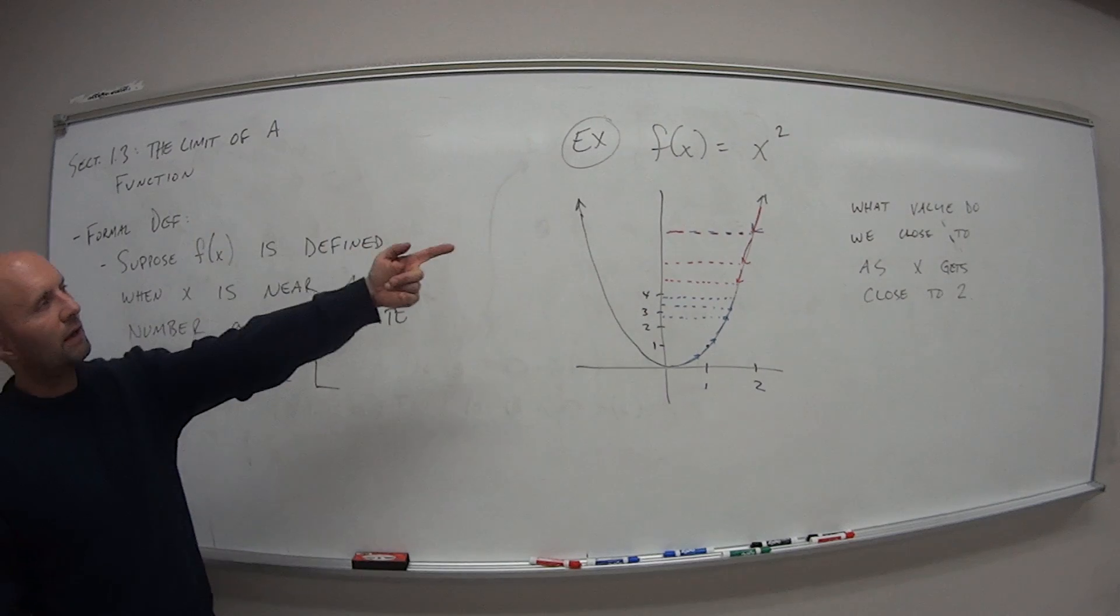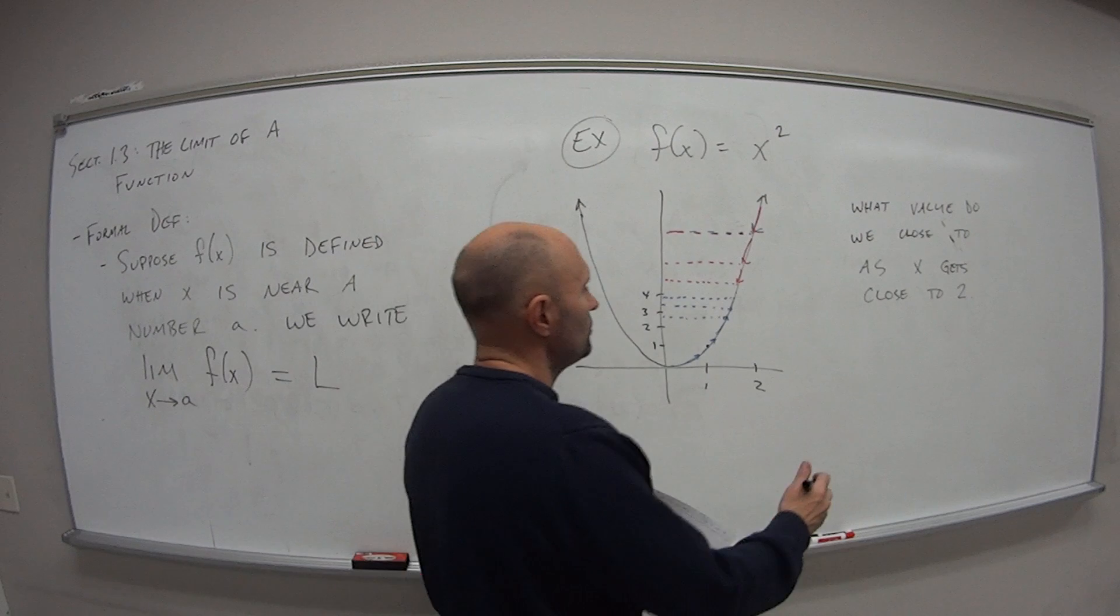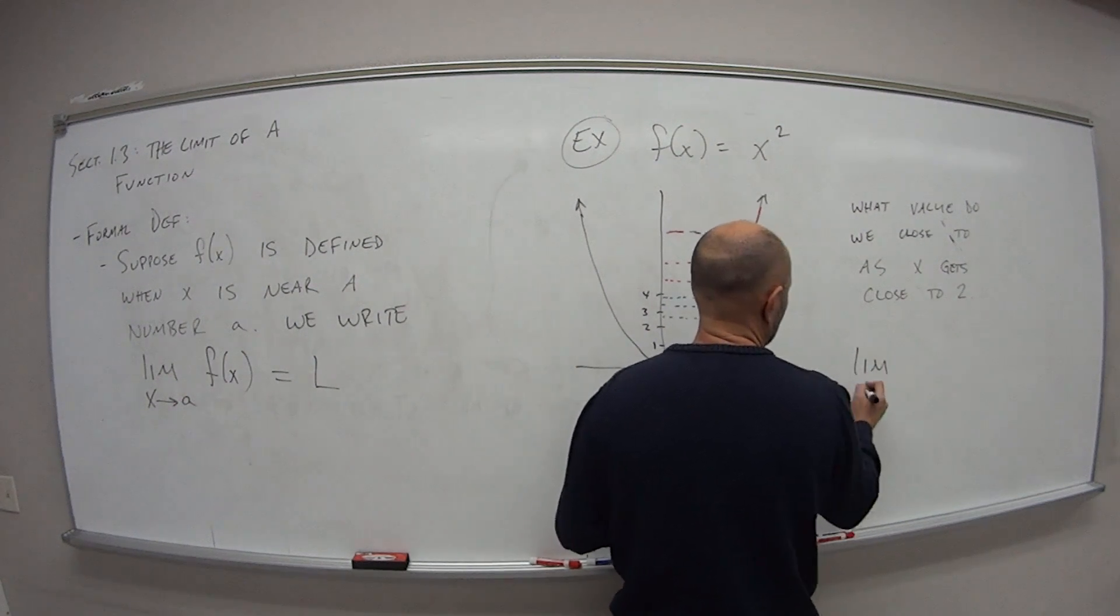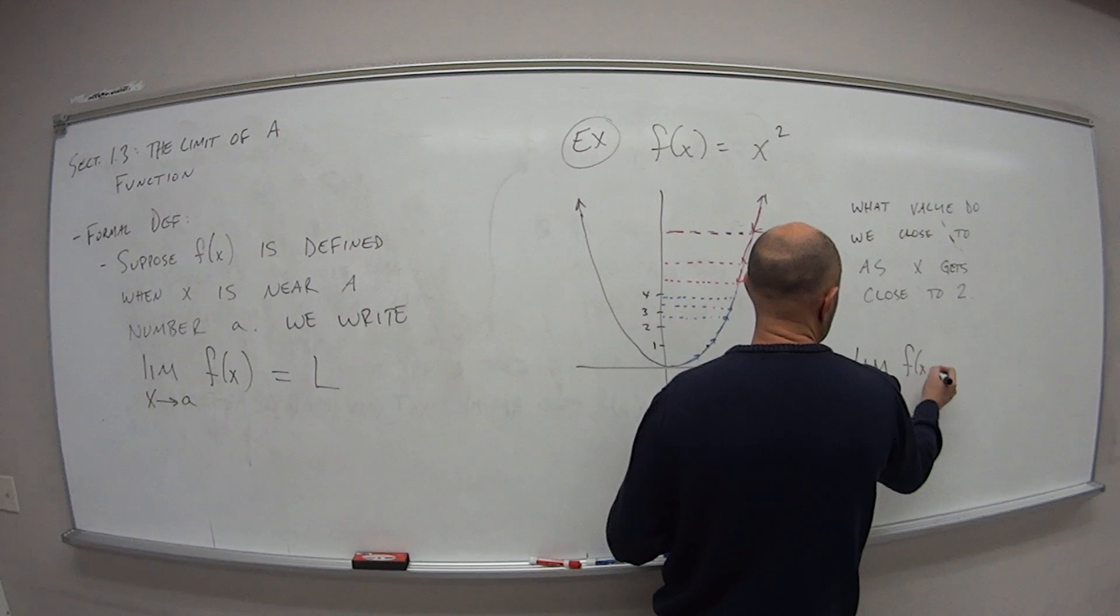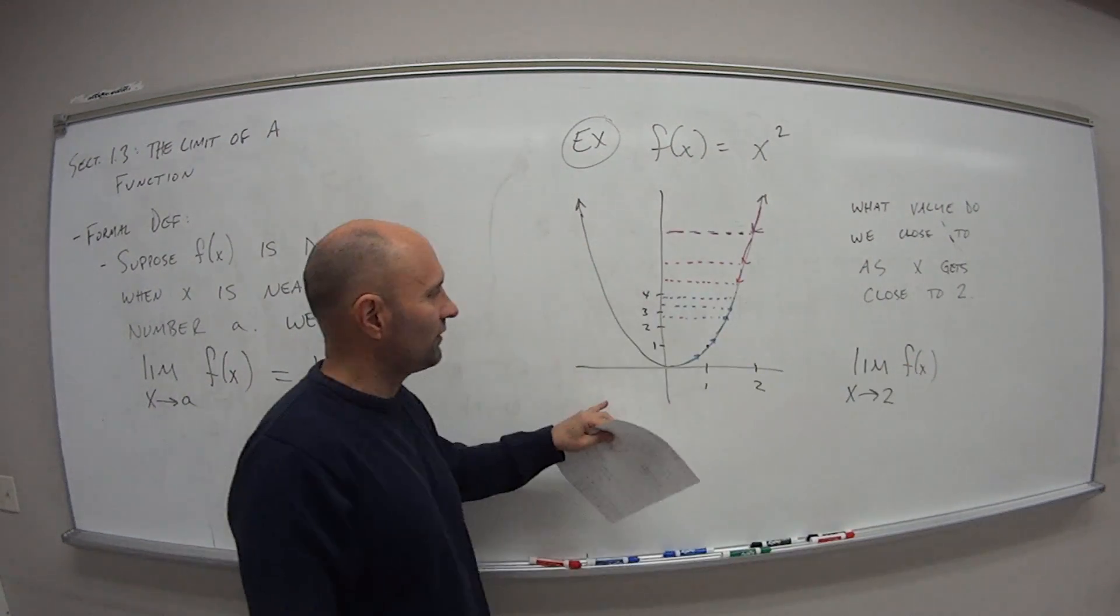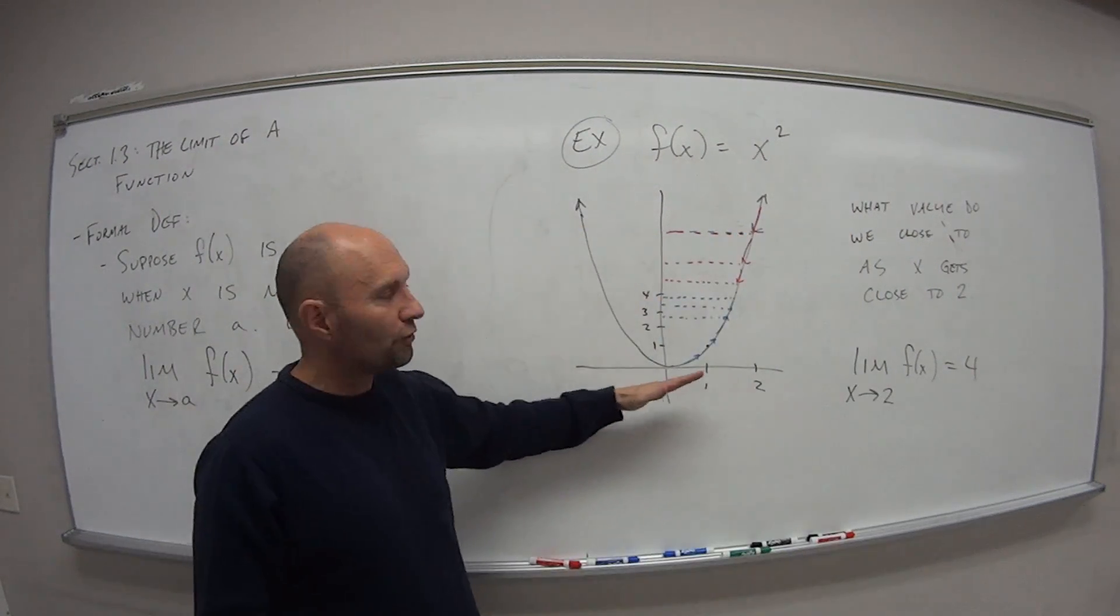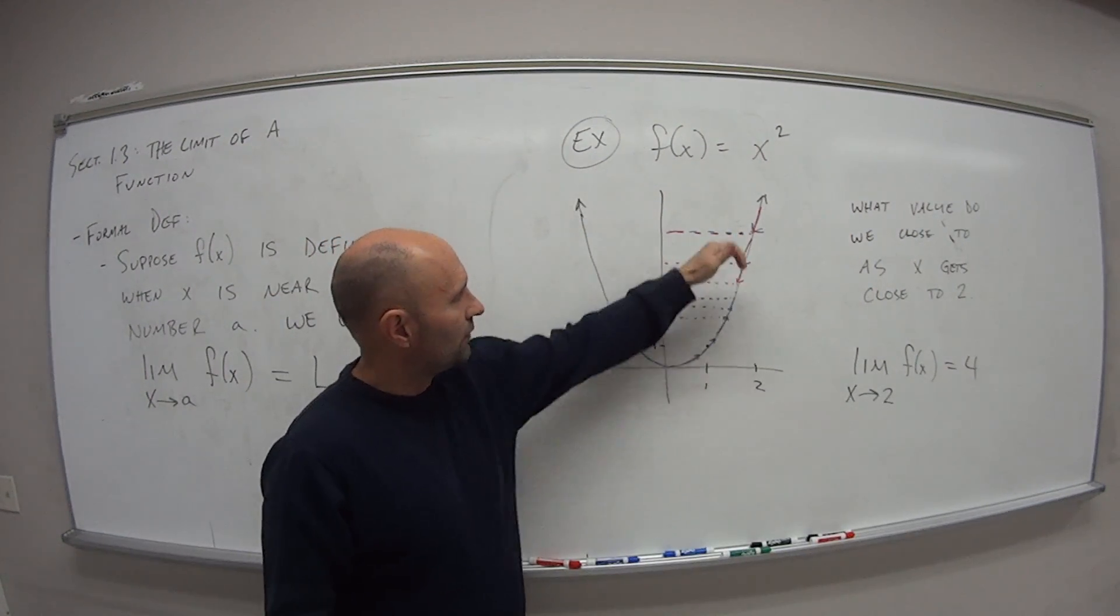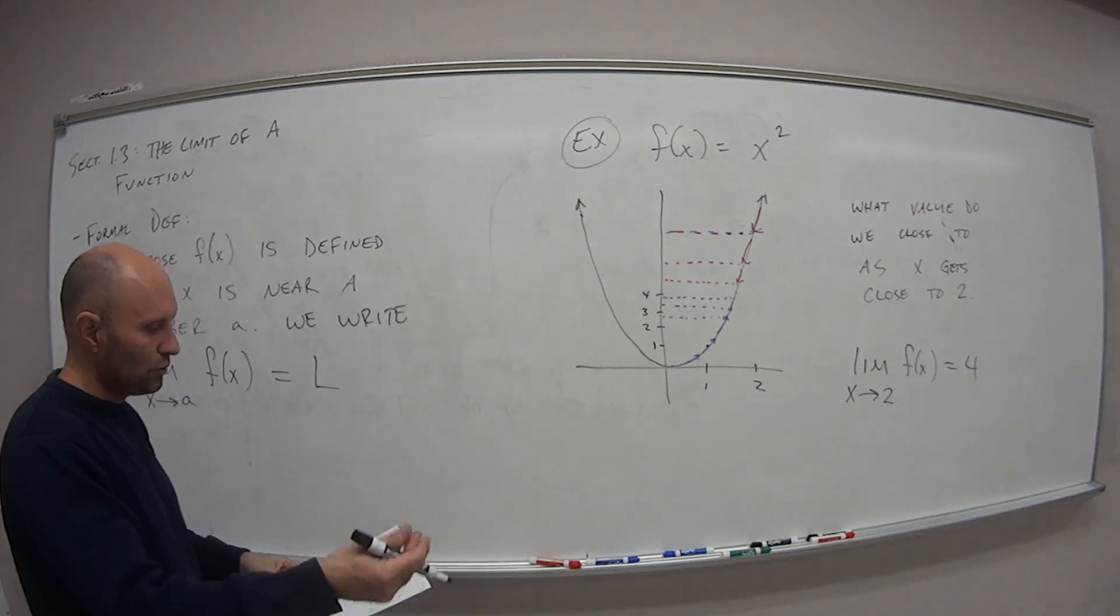So if we're talking in this case here, the limit as x approaches 2, so the limit as x approaches 2 of our function, which is x squared in this case, as we saw this value is 4. So the closer that we get to 2 from either the left side or the right side, we're getting closer and closer to a value of 4.